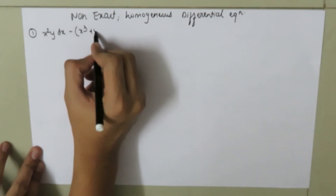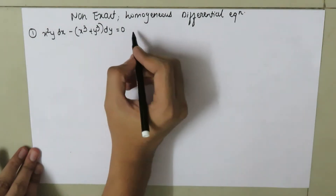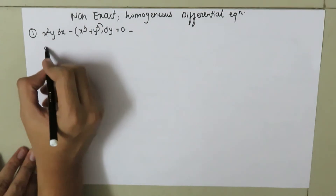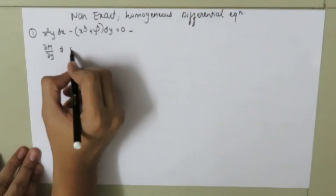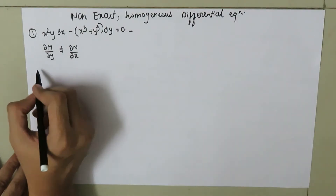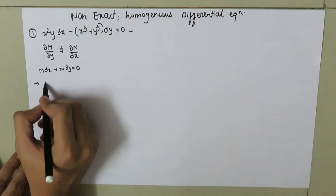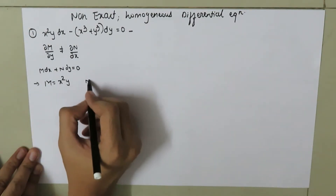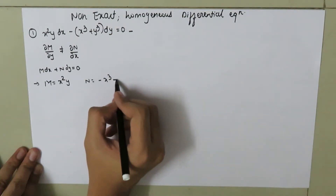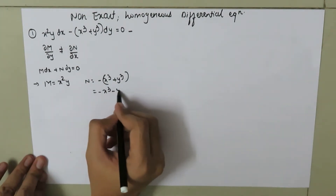Our first example is: x squared times y dx minus (x cubed plus y cubed) dy equals 0. The differential equation is non-exact when ∂M/∂y is not equal to ∂N/∂x. We know the general form is M dx plus N dy equals 0, so here M equals x squared times y, and N equals negative x cubed minus y cubed.